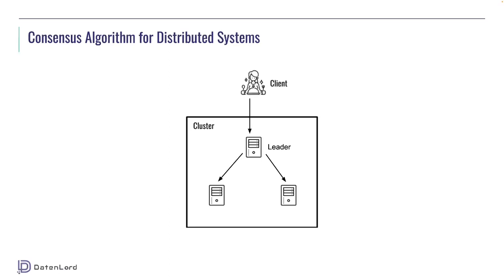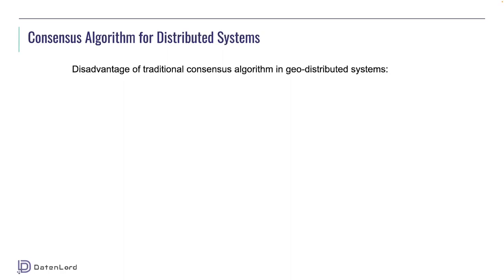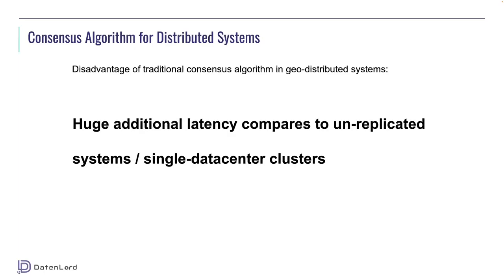The leader replicates the command in the request to all replicas. This consumes one RTT. When consensus is reached, the leader replies the result to the client. Including the client, the whole process costs two RTTs to finish. Two round trip times is quite expensive since the latency between nodes is quite high. The disadvantage of traditional consensus algorithms in geo-distributed systems is that they cause huge additional latency compared to unreplicated systems or single data center clusters.